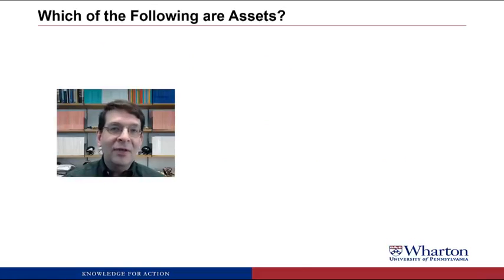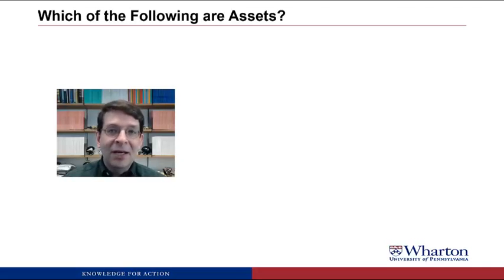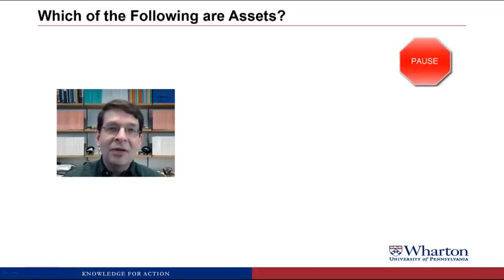Now let's practice applying these criteria to figure out which of the following are assets. I will give you a number of items, and for each one I want you to try to figure out if it's an asset or not. If it is an asset, try to give me the account name we would use for it and the dollar amount. If it's not an asset, try to figure out which criteria would cause it to not be an asset. I'll put up the pause sign if you want to try it yourself; otherwise you can roll through to the answers and try this out on the homework.